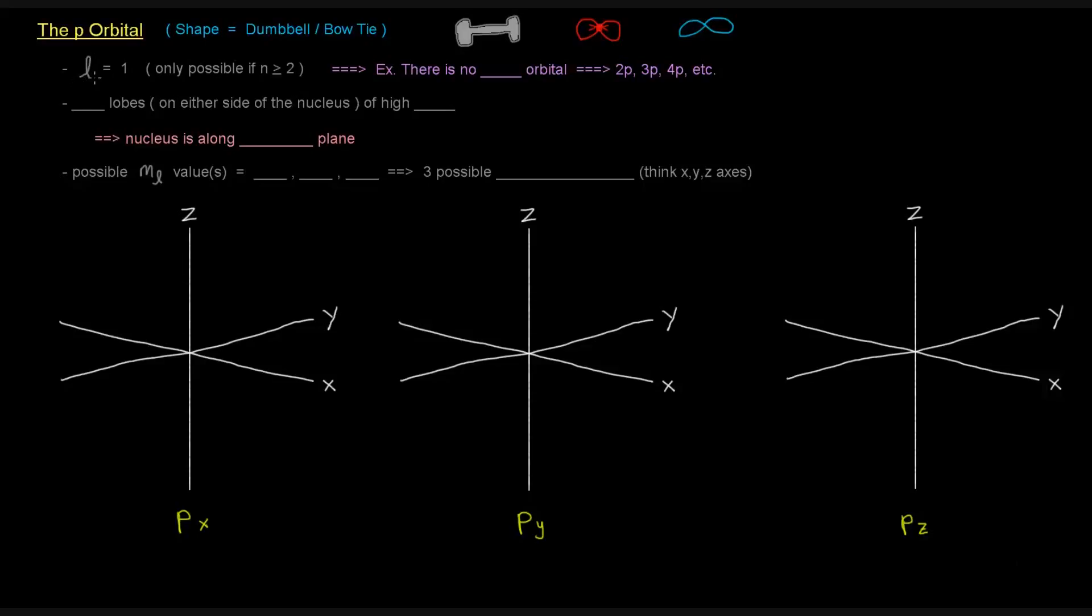Its L value is 1. So that's only possible if the n value is equal to or greater than 2. There's no 1p orbital.